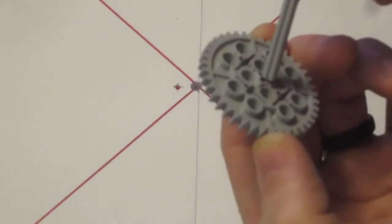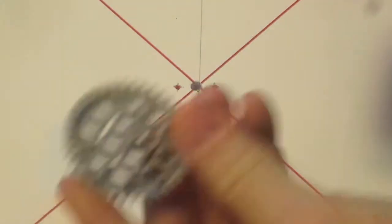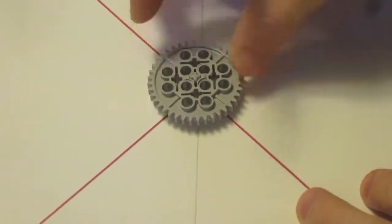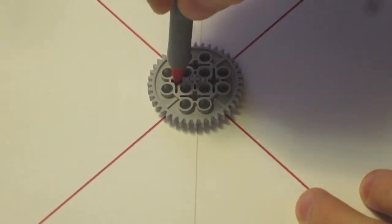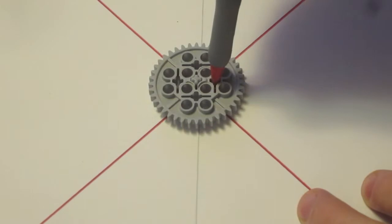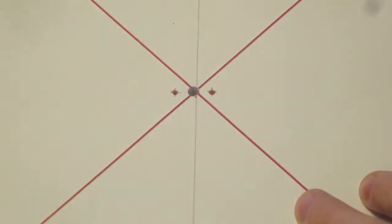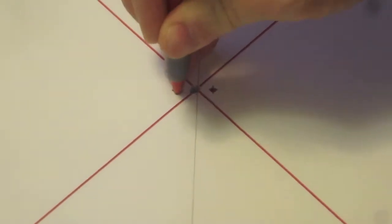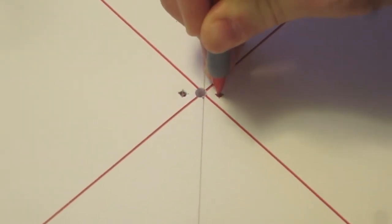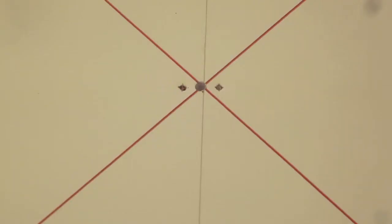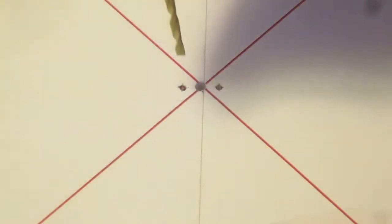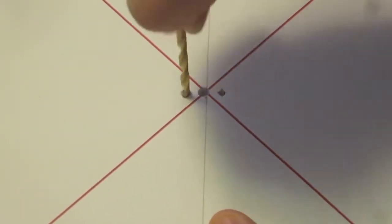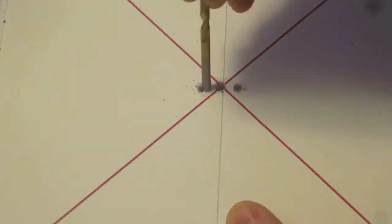We're using this guy right here. We made a mark there. We made a mark there. Pull this out. Got a pilot hole put right here and right here. And we're going to use our 5/32nd inch drill bit. Go ahead and clear those holes out.